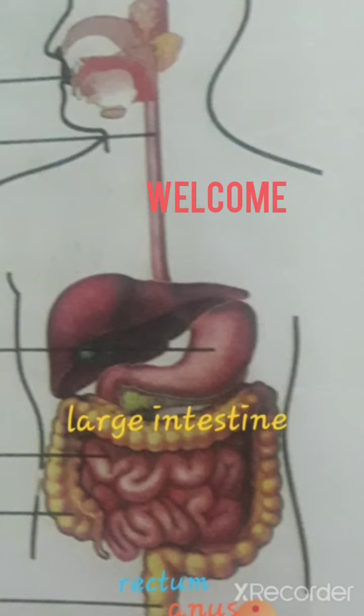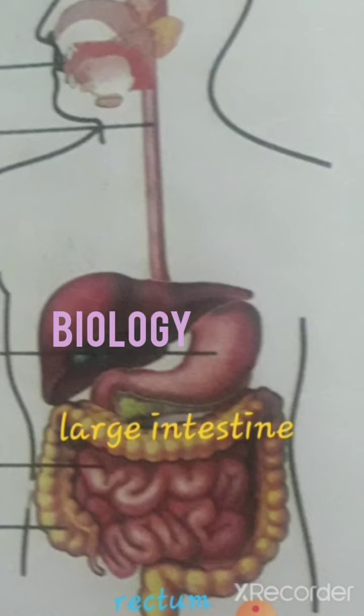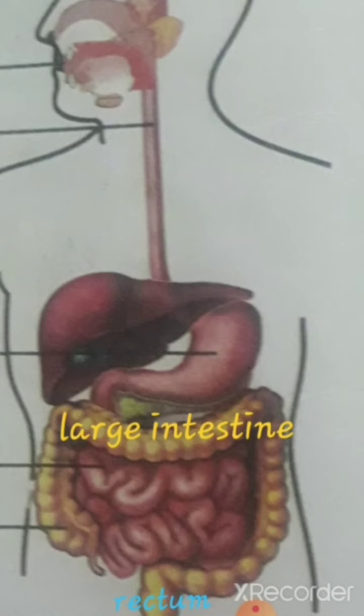The large intestine is the last part of the gastrointestinal tract. It is 5 feet long and 3 inches in diameter. It is most responsible for absorption of water from the indigestible residues of food. The main regions of the large intestine are the cecum, the colon, and the rectum.